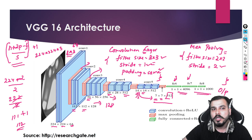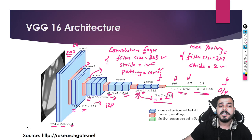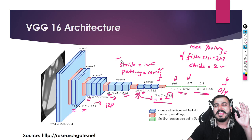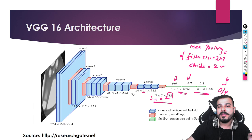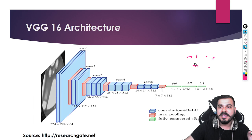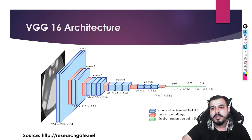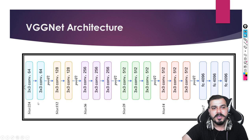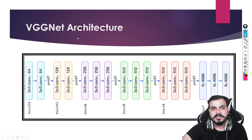VGG16 is better than AlexNet's architecture because it has more layers — 16 layers in VGG16 and 19 in VGG19. After AlexNet, people started experimenting with different convolution and max pooling configurations. In VGG16, the convolution layers always use 3×3 filter size with same padding and stride 1, while max pooling always uses 2×2 with stride 2. You'll see all the architecture details when we look at the model summary in code.